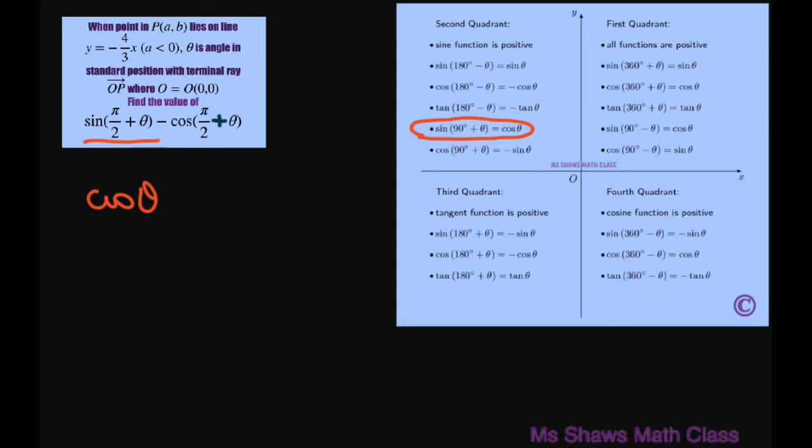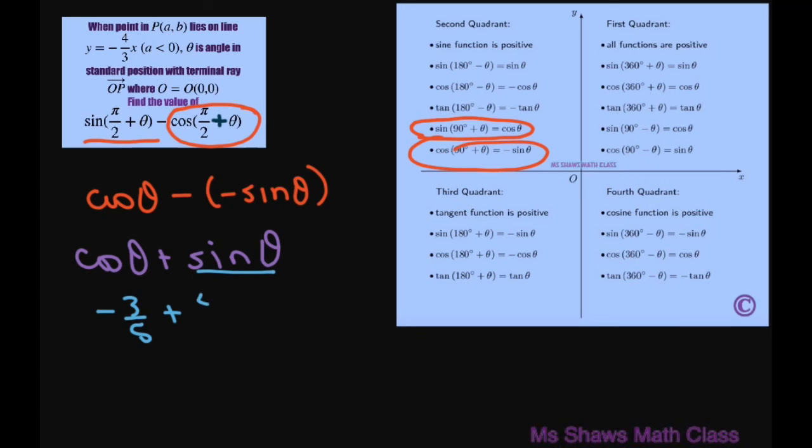Then we're going to have minus. Now this one right here is negative sine. So that's going to be minus sine of theta. So we end up getting cosine of theta plus sine of theta. Now cosine of theta was negative three fifths and sine of theta was four fifths. So our final value is going to be one divided by five.